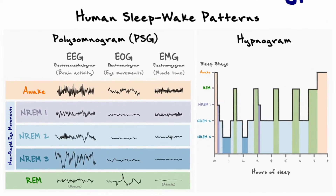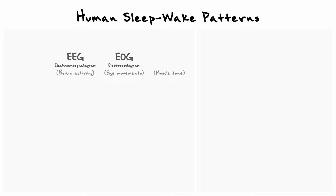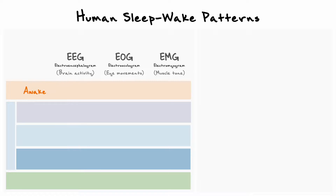Starting with our sleep-wake patterns, some of the key markers that scientists use to differentiate whether someone is awake or not include brain activity, levels of eye movement, and muscle tone. These behaviors are respectively measured by the electroencephalogram or EEG, the electrooculogram or EOG, and finally the electromyogram or EMG. By using these behavioral markers, it's possible to separate the awake state from sleep and divide the sleep state into four distinct phases — three corresponding to non-rapid eye movement or non-REM sleep, and the remaining phase corresponding to rapid eye movement or REM sleep.